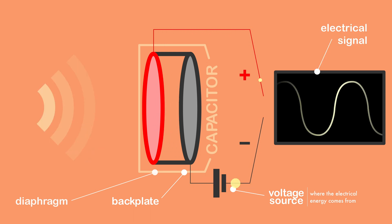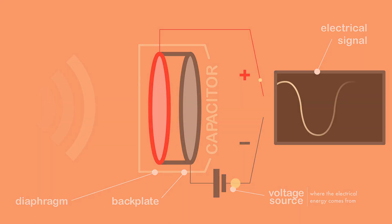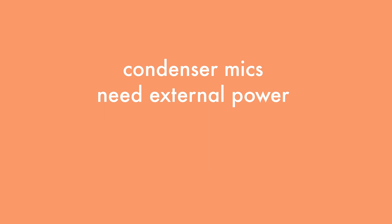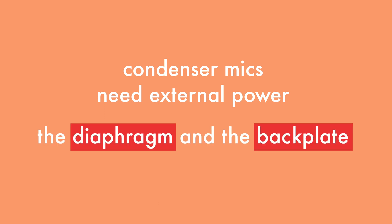Like with dynamic microphones, the electrical signal that's produced will closely mimic the waveform of the incoming audio signal. Unlike dynamic mics, however, condenser microphones need external power because the diaphragm and the back plate need to be electrically charged to function.